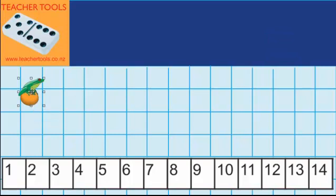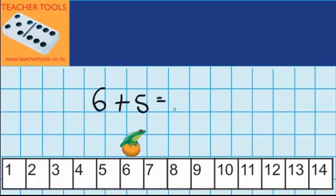Let's start by imagining that this frog lives at number 6 on the number line and wants to move forward 5 more numbers. Now I can record that like this: 6 plus 5 equals something.